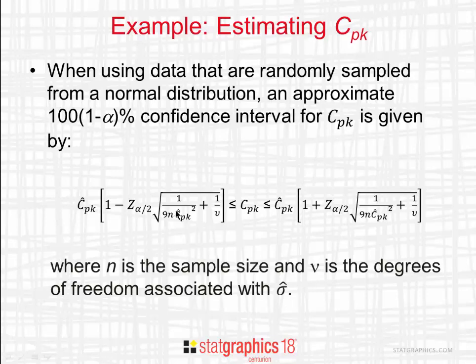This expression involves the sample size n and the number of degrees of freedom nu used to estimate the process standard deviation. What we're going to do here is determine how large n needs to be to get an acceptably precise estimate of CPK.